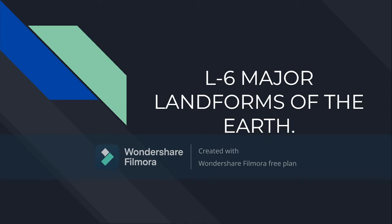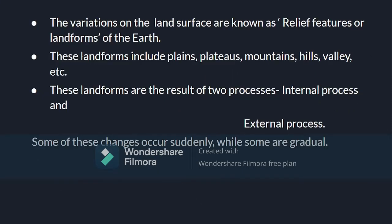Now, whenever we see our earth from space, its surface looks plain. But in reality, this earth has many ups and downs. These particular variations on the land surface of the earth are known as relief features or landforms of the earth. These landforms include plains, plateaus, mountains, hills, valleys, and so on and so forth.